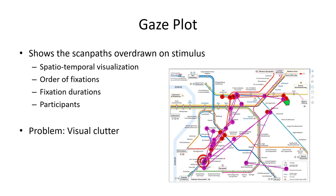A gaze plot is a standard eye-tracking data visualization that shows scan paths overlaid on a stimulus. It is a spatio-temporal visualization showing the order of fixations, the fixation durations, and individual participants. However, the biggest issue is visual clutter — the state in which excess items or their disorganization lead to a degradation of performance. In this figure, you can see two scan paths by a red colored user and a magenta colored user, and already those two scan paths produce some overdraw and visual clutter.